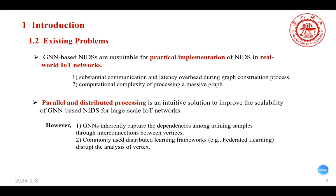While GNN-based NIDS have demonstrated satisfactory performance on open datasets, they are unsuitable for practical implementation in real-world IoT networks. Parallel and distributed processing is an intuitive solution to improve the scalability of GNN-based NIDS for large-scale IoT networks. However, GNNs inherently capture the dependencies among training samples through interconnections between vertices, while commonly used distributed learning frameworks disturb the analysis of vertices.